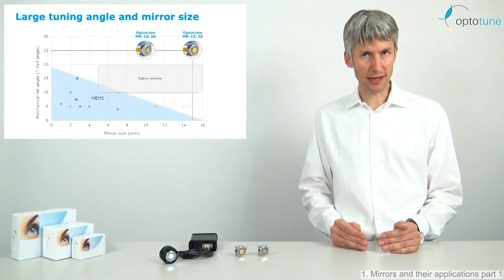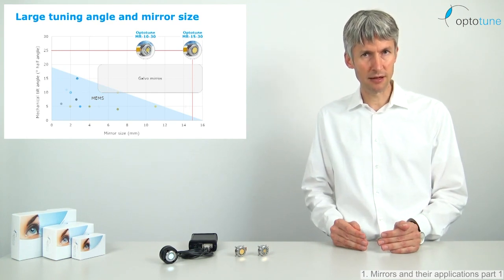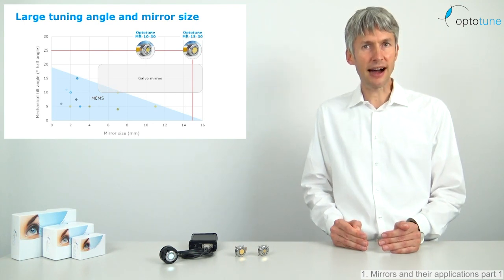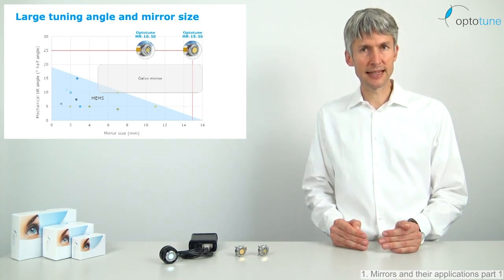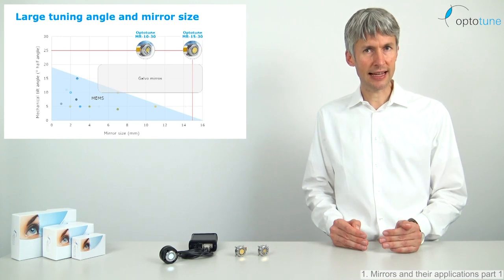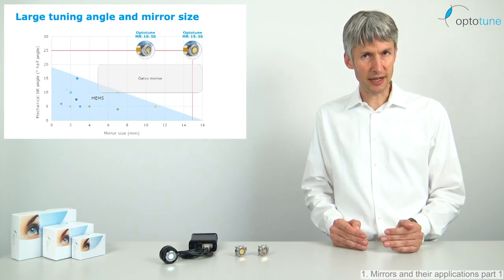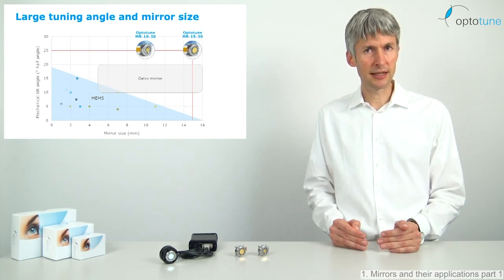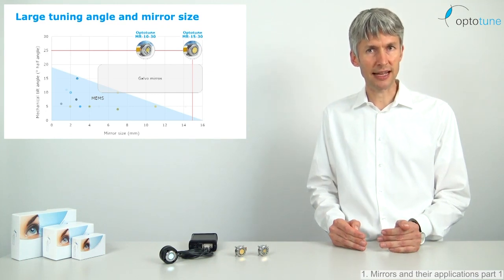When plotting different commercially available 2D MEMS mirrors along the axis of mirror size and tilt angle, one quickly sees that they are in the lower left corner. Either they are limited in tilt angle or mirror size. Galvo mirrors, on the other hand, can have large mirror size and tilt angle, but they are basically two one-axis mirrors integrated in a scan head. This requires a lot of space, leads to double reflection losses and beam shifting, because the rotation points of the two mirrors are not at the same location.